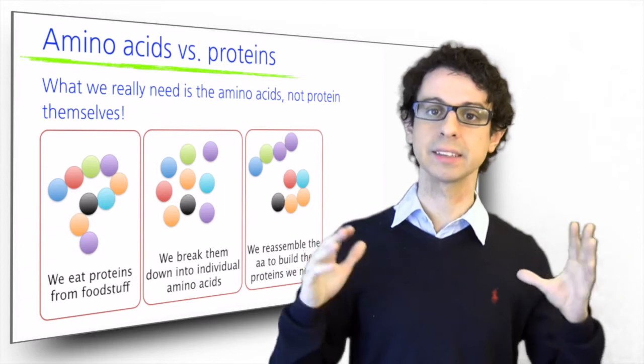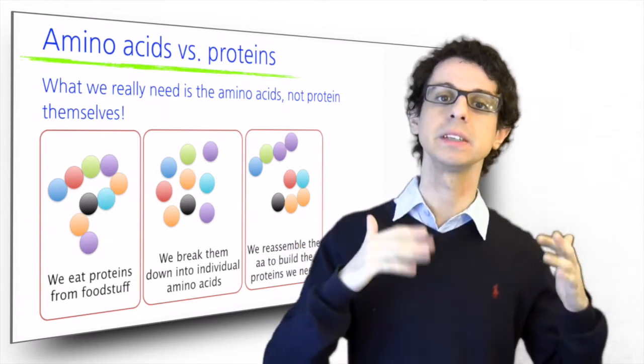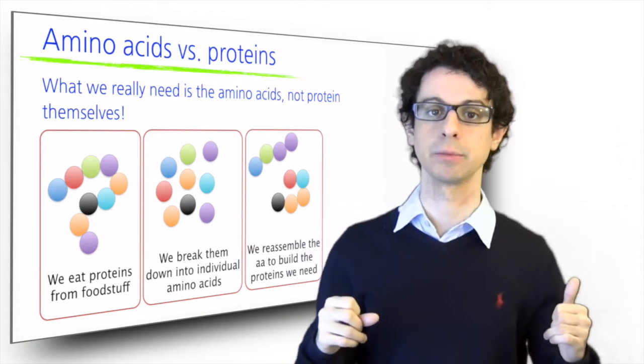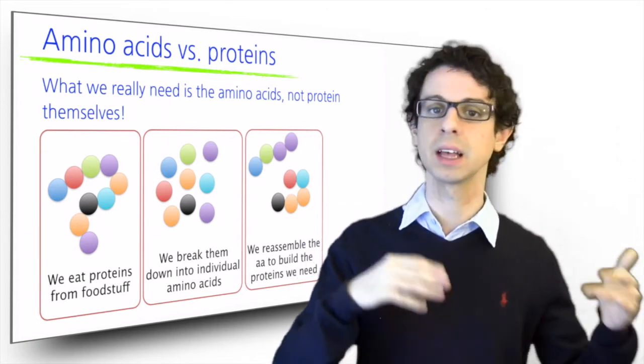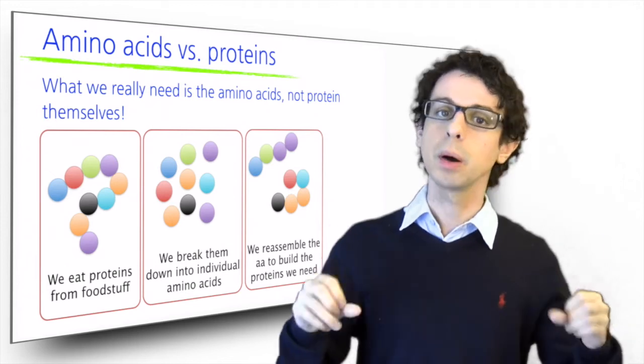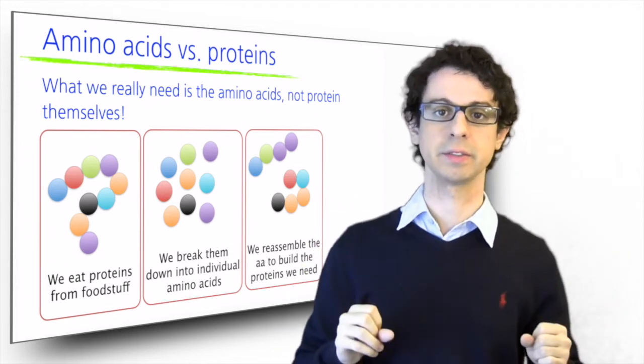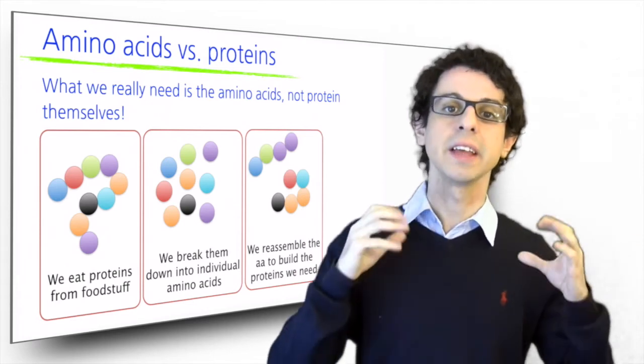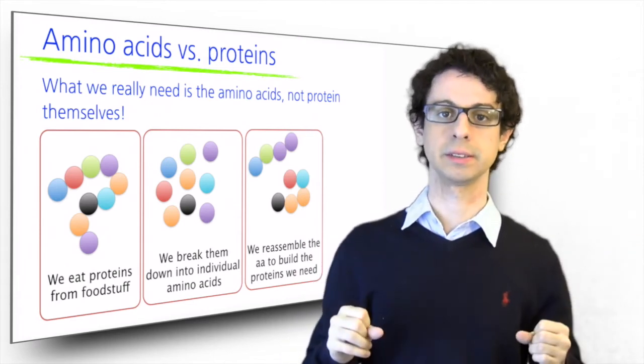The proteins we eat from plants and animals all have their specific biological functions in the plants and the animals that they come from. Some of them are enzymes, some are structural components and so on. But we don't care at all about these functions. We only care about the pieces, that is the amino acids, that these proteins are made of.